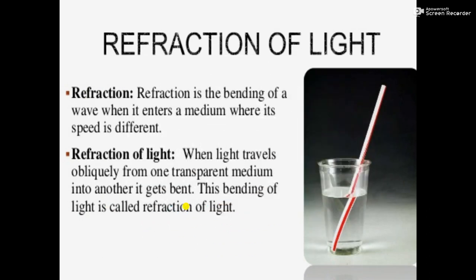First is refraction of light. Let us first discuss about the general definition for refraction. Refraction is the bending of a wave when it enters a medium where its speed is different. Bending of a wave means from the straight path there is a change in direction of a wave. Wave can be any wave — light wave, sound wave, etc. A difference in speed is must for refraction.